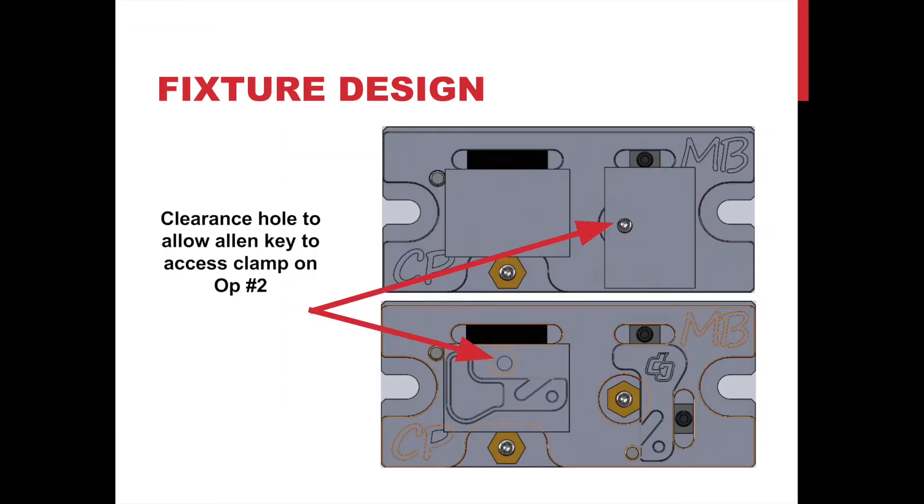Here we see an overall view of our fixture layout. One of the design constraints was that OP1 and OP2 must be able to be held simultaneously on the plate. Using this constraint, we were somewhat limited in where we could place OP1 and OP2. As you can see, OP1 is on the left and OP2 is on the right. We added a clearance hole on OP1 so the clamp could be tightened in OP2.